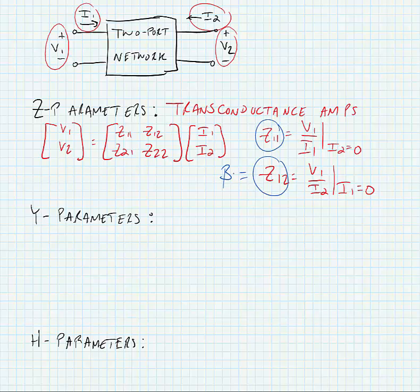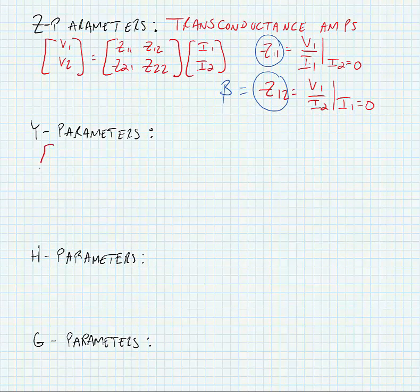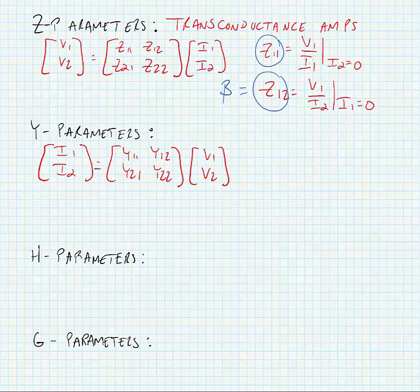In fact, all of the 1,2 parameters in the networks and parameter sets that we're going to look at are equal to beta. Y parameters are very similar to Z parameters. We are just going to invert the solution for voltage and current. Of course, these parameters are used for transresistance amplifiers.